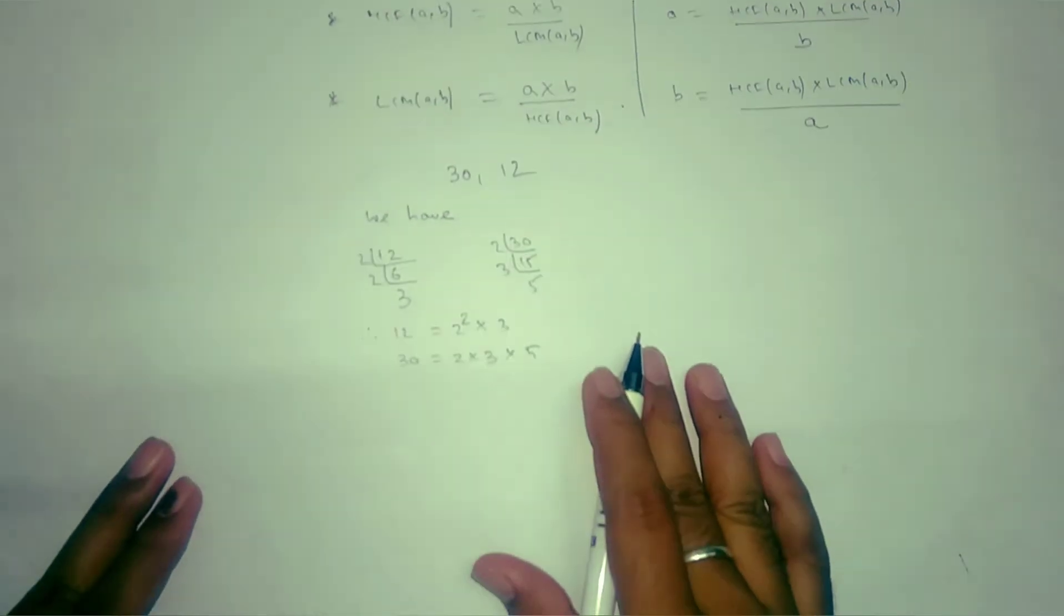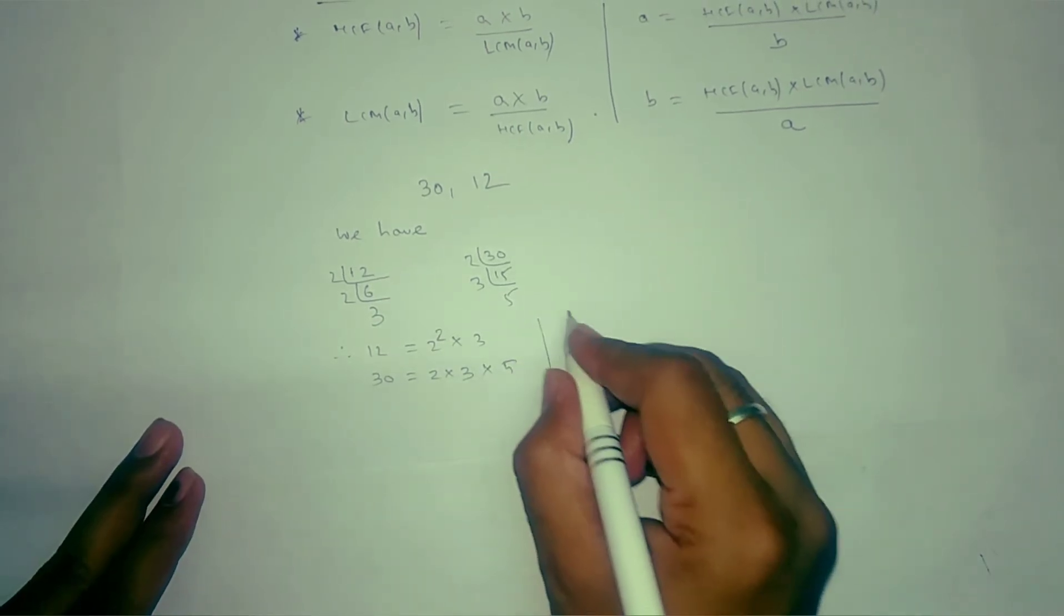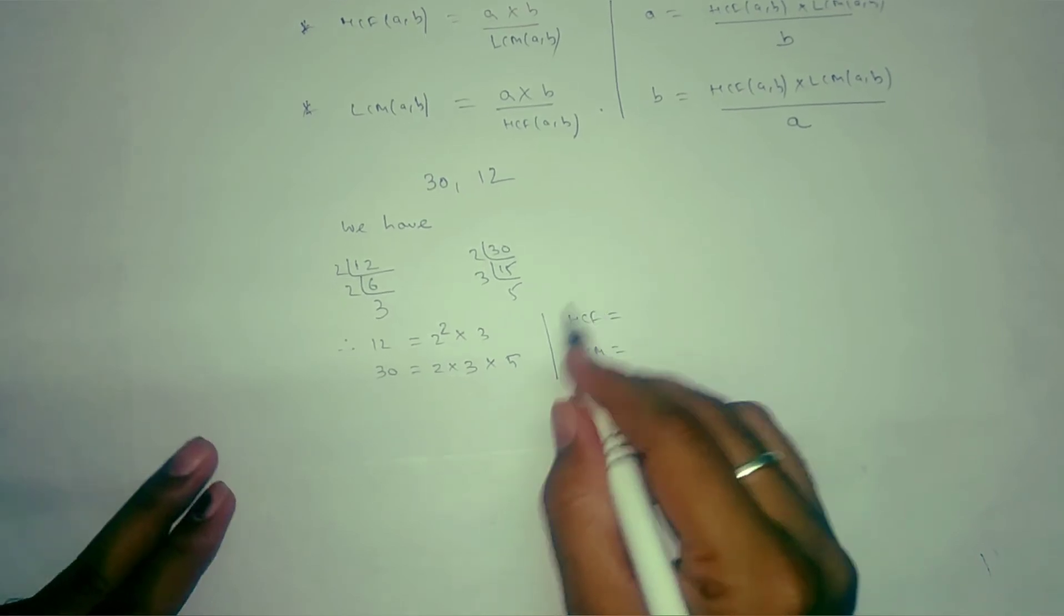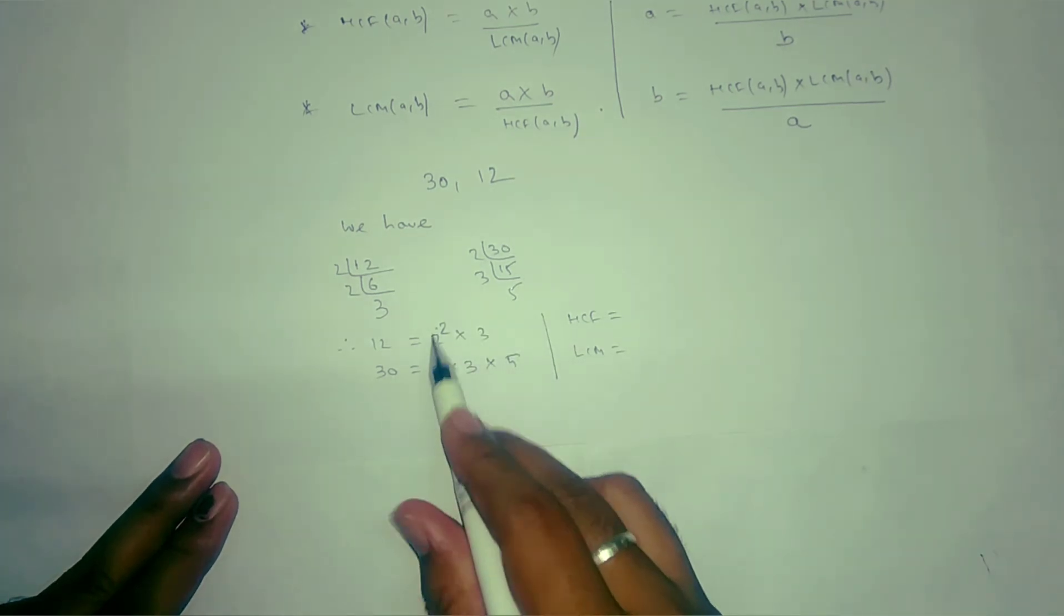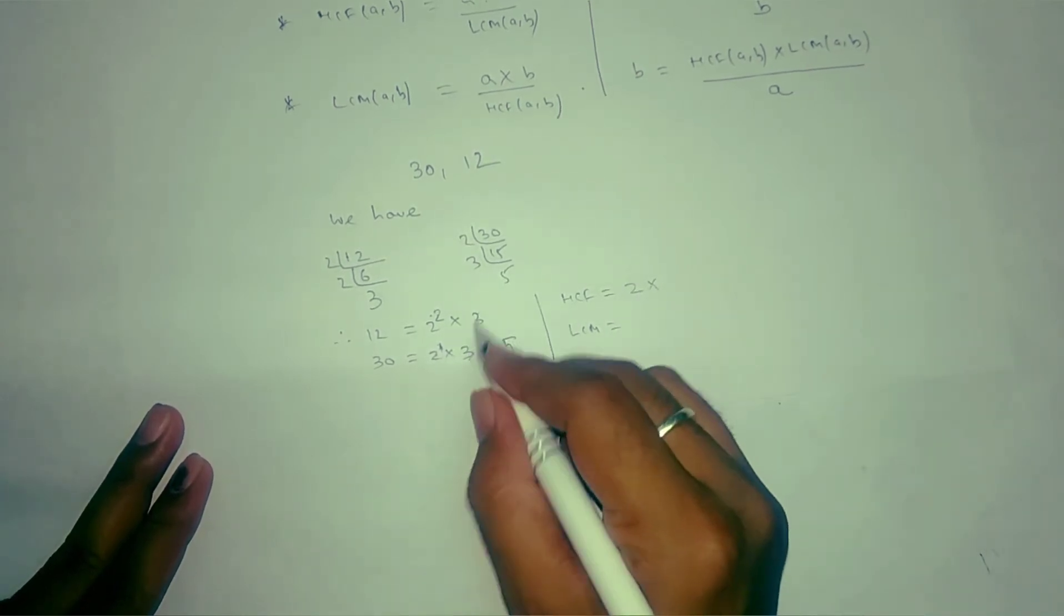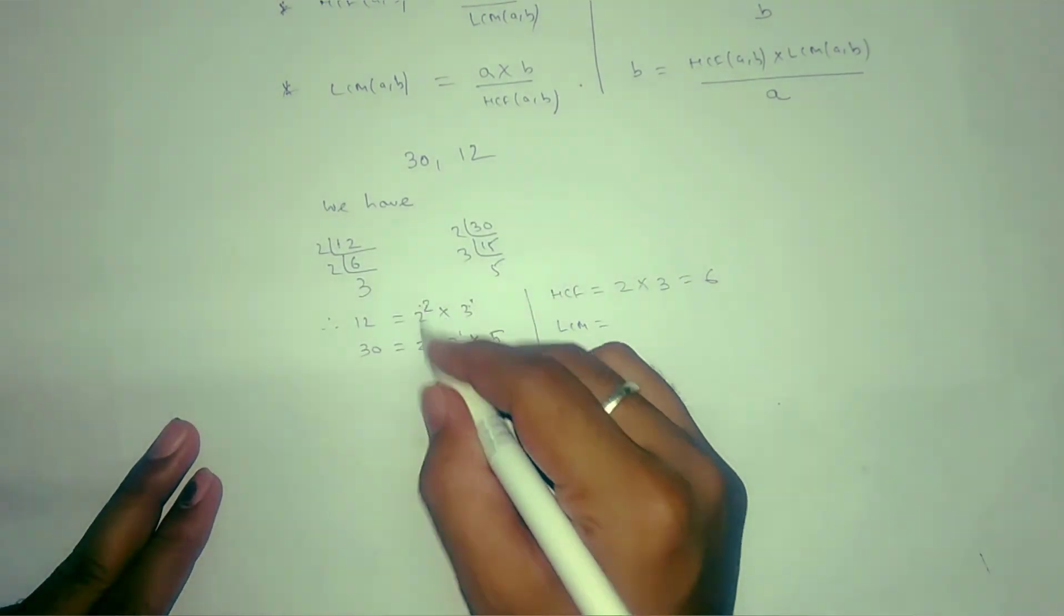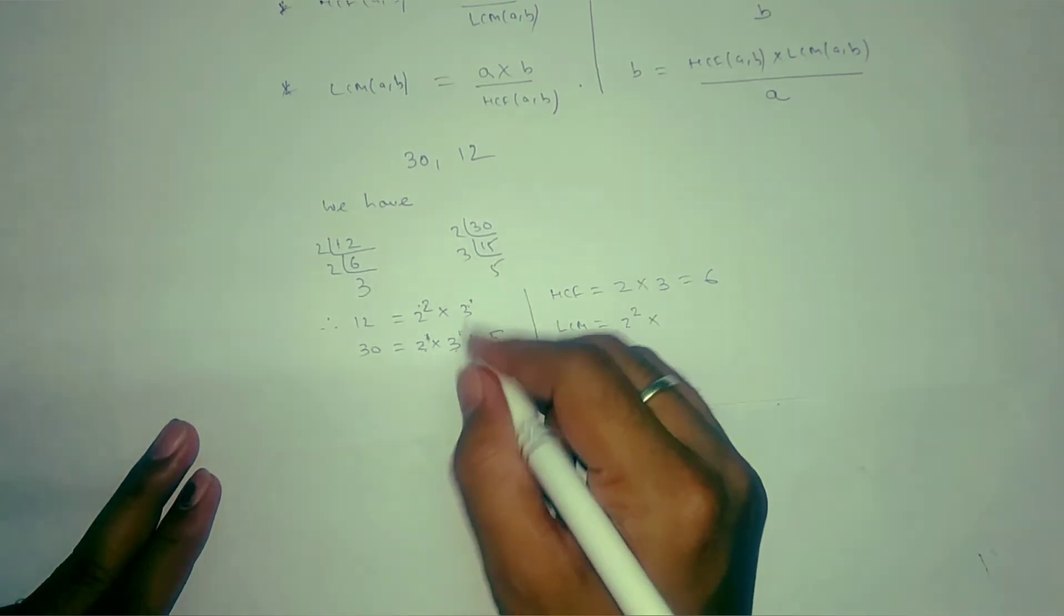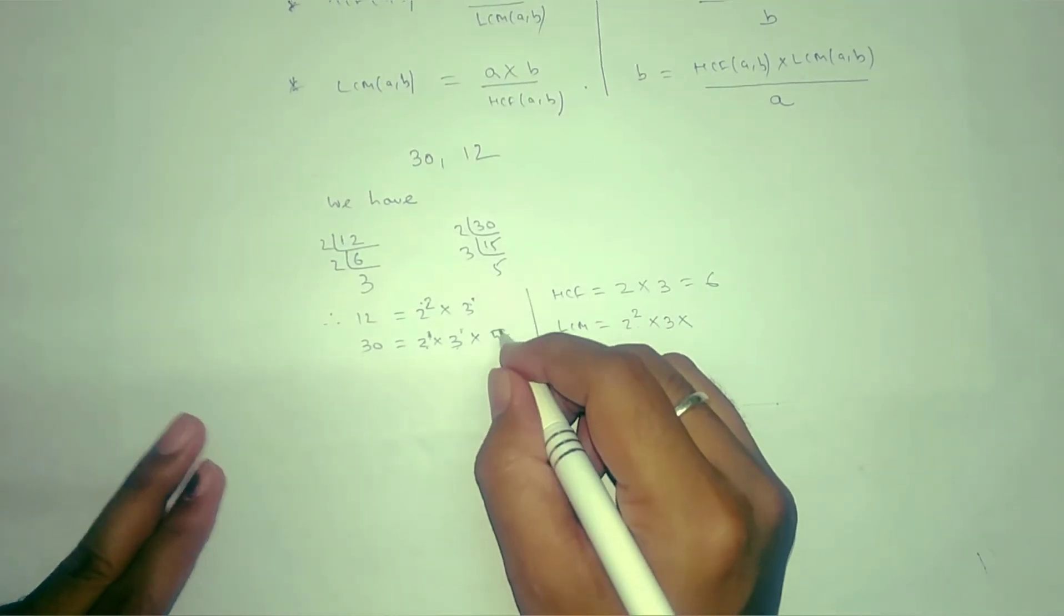From here we can apply our concept to find HCF and LCM. To find HCF, we need to find the common factors with the lowest exponent. So 2 is common with power 1, and 3 is common with power 1, giving us 6. For LCM, find the common factors with the highest exponent: 2 squared, 3, and 5. There is no 5 in 12, no problem, we'll take the 5 here.